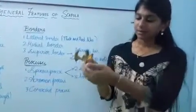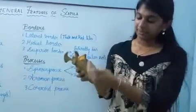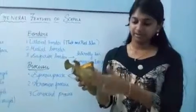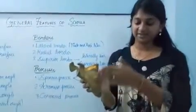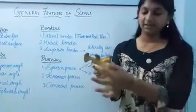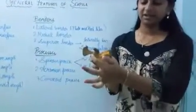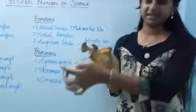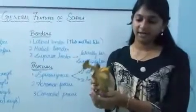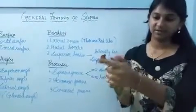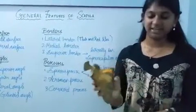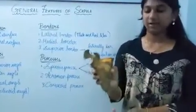Now coming to the anatomical position. The costal surface should be facing anteriorly and a bit medially. The glenoid cavity should be facing laterally and a bit forward and upward, and the coracoid process should be facing almost forward. This is the anatomical position.